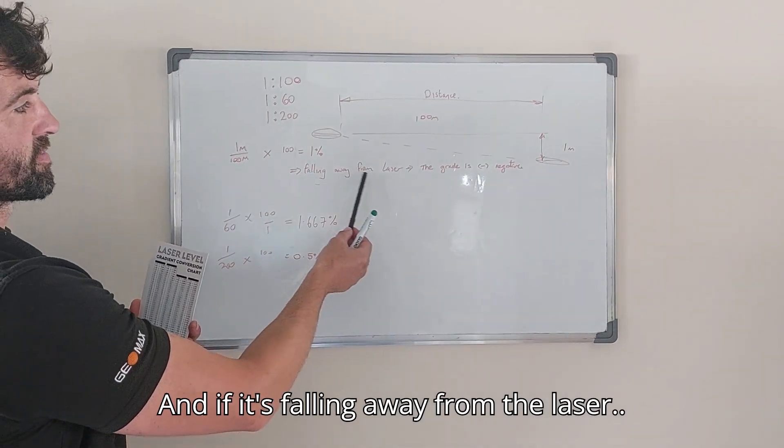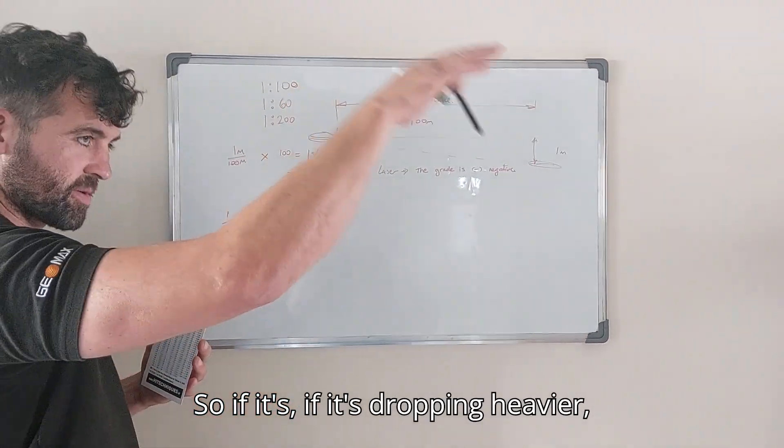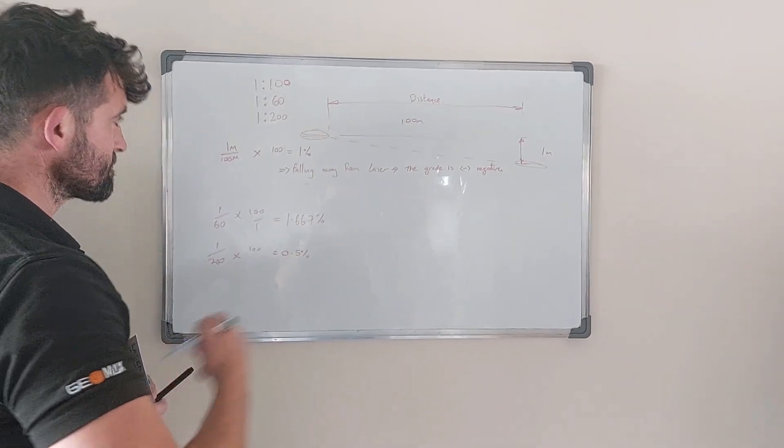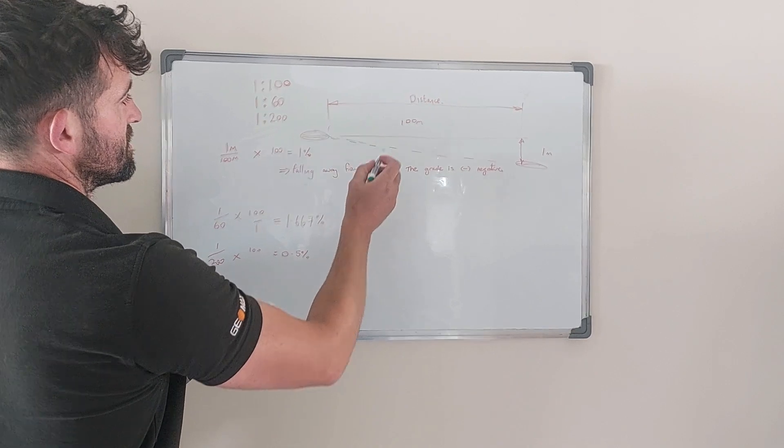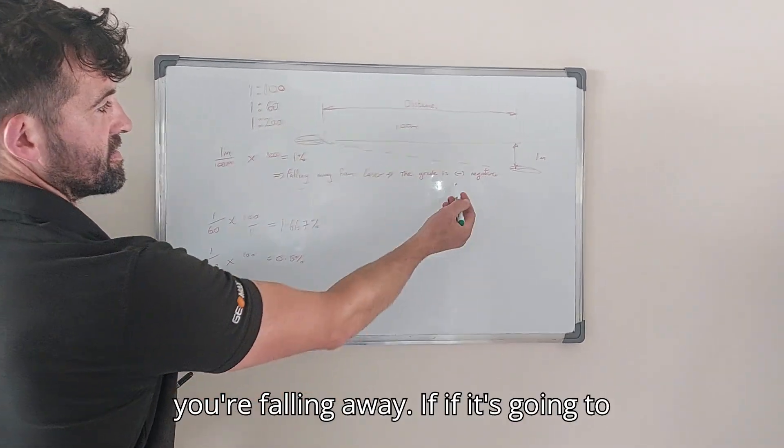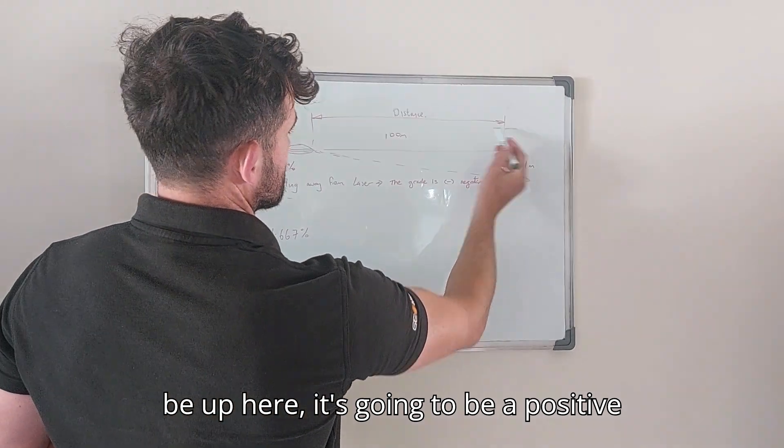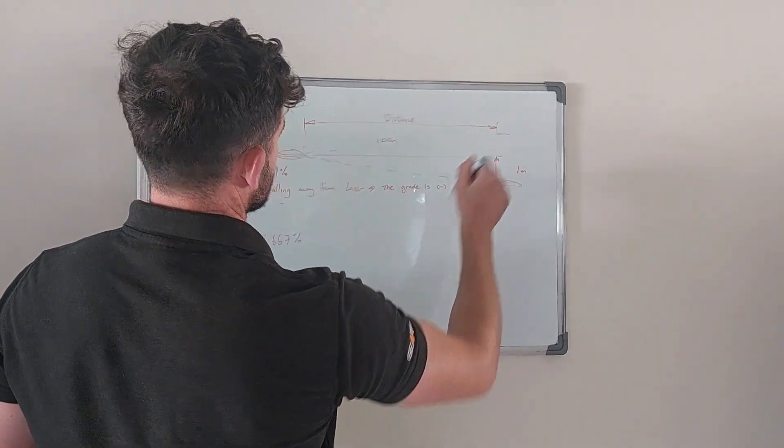And if it's falling away from the laser, so if it's dropping or heavier, your laser is going to be set up here and that's going to be beaming out. That's going to be a negative value if you're falling away. If it's going to be up here, it's going to be a positive value from that direction.